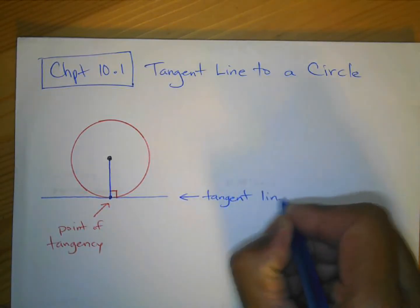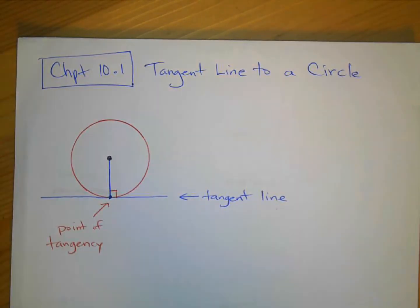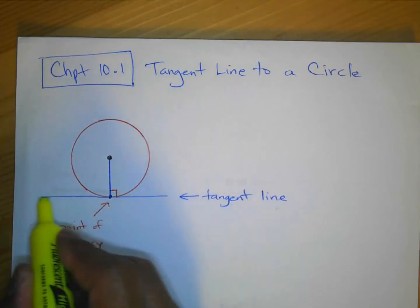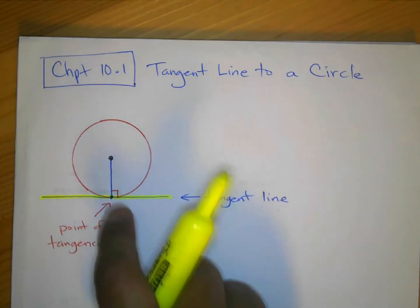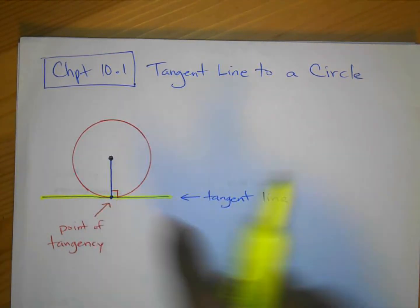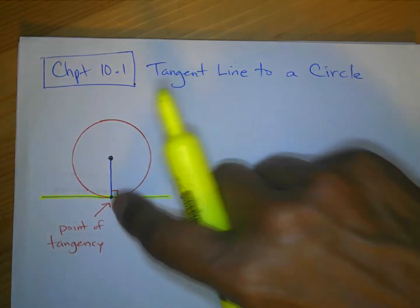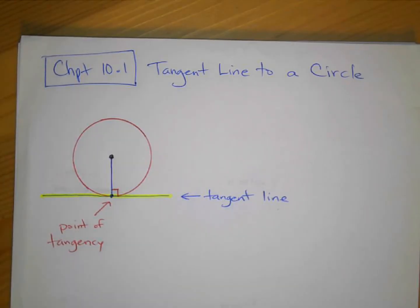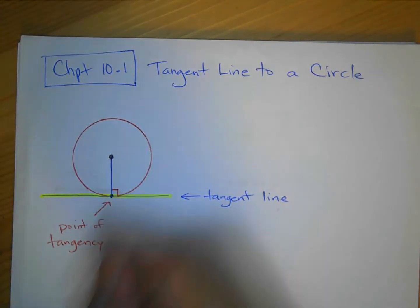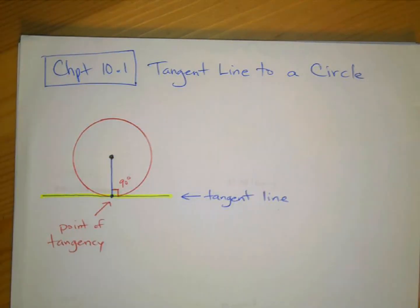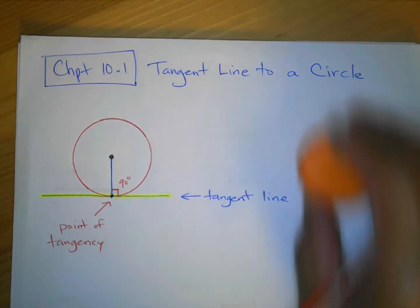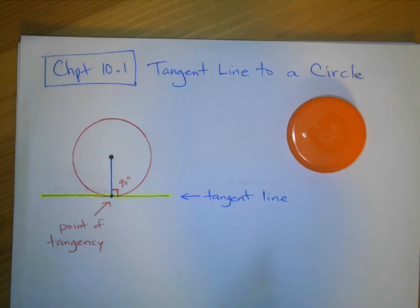This is the tangent line right here. That one point where it touches the circle — if you connect a line from that point to the center, it makes a 90-degree angle. This symbol here indicates a right angle — 90 degrees.